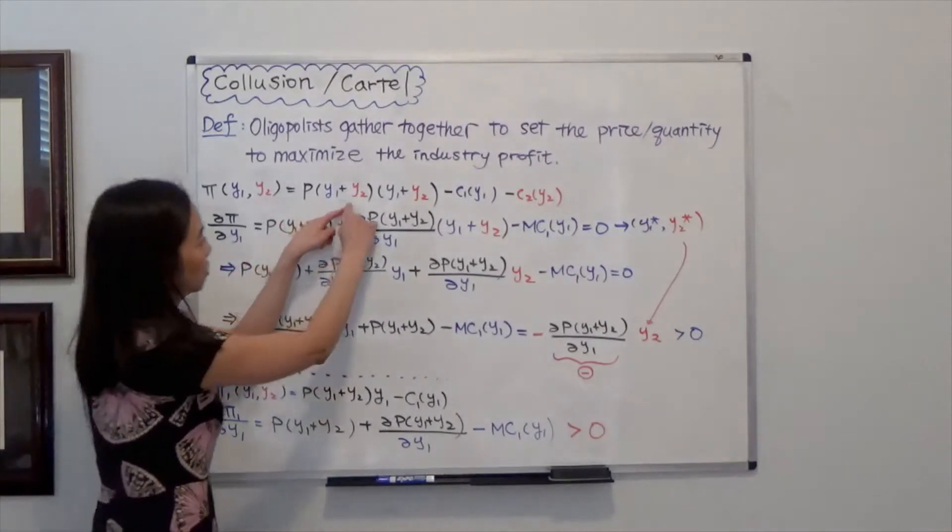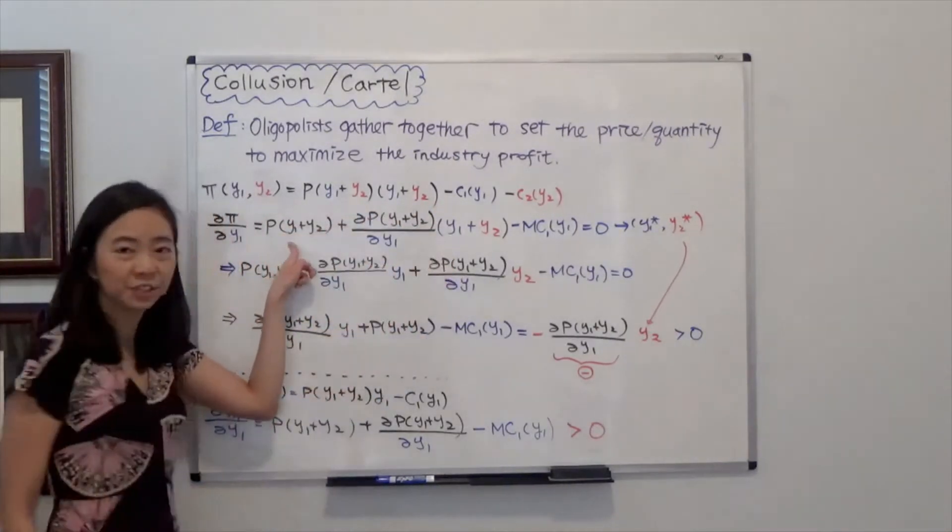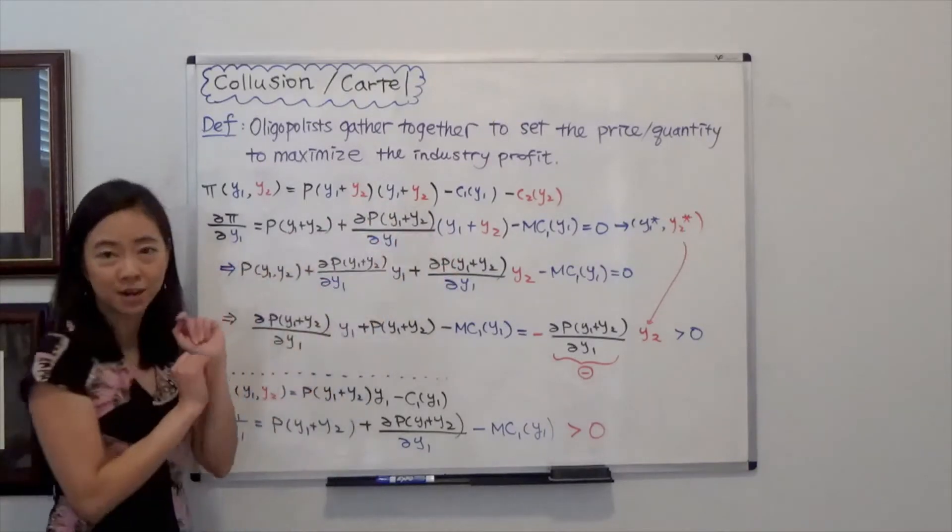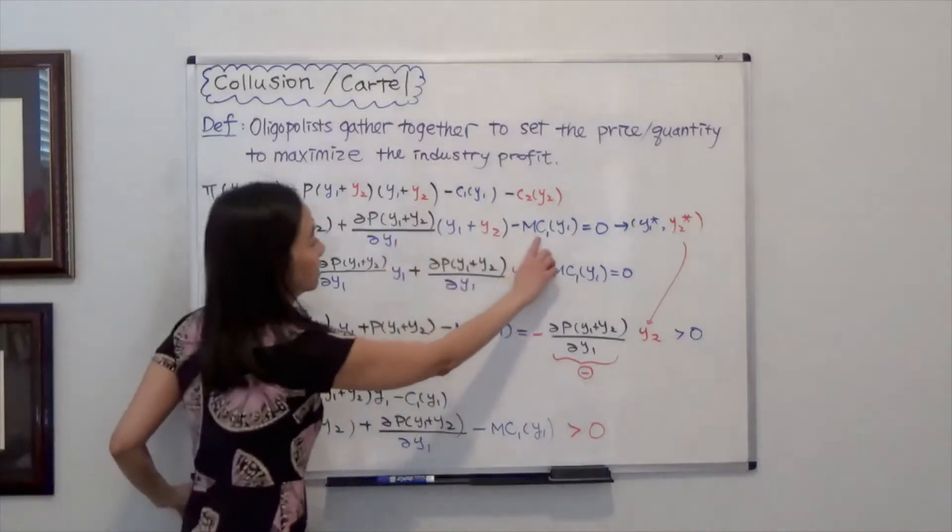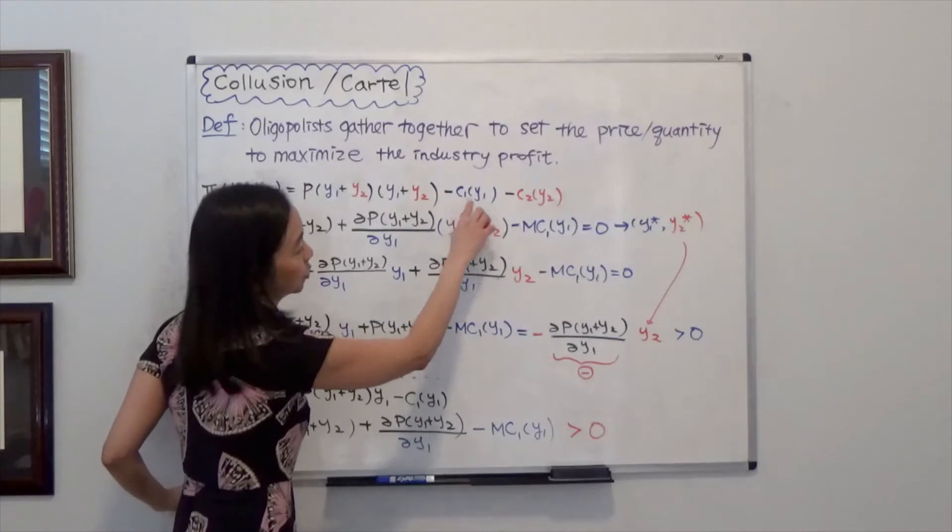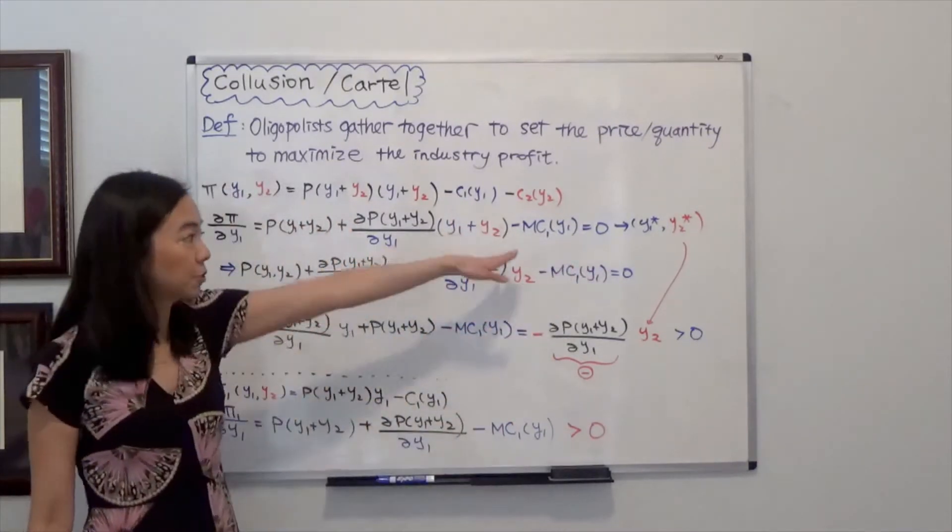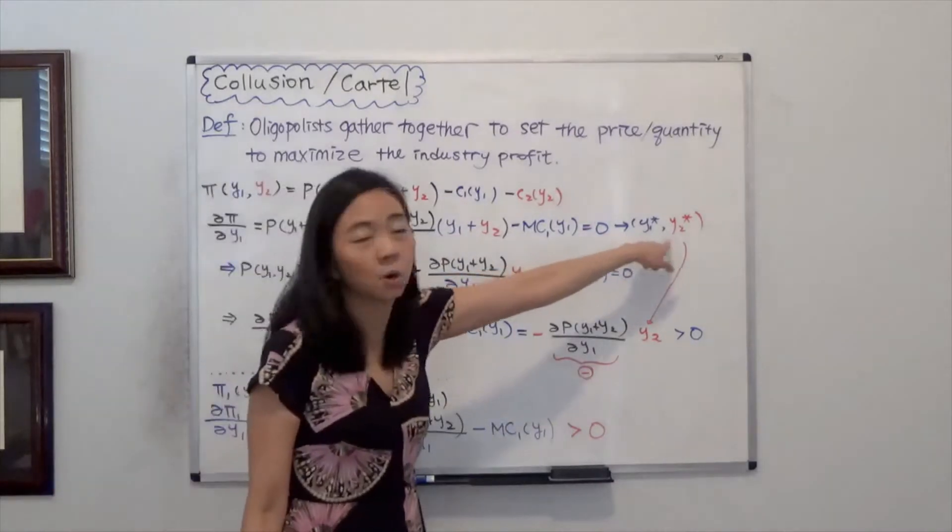Here we use the product rule to take derivative of the revenue. So we have two terms. That's for the product rule. Minus partial C, partial Y1 is just the marginal cost of firm 1. And we set them equal to 0 to find Y1 star Y2 star.